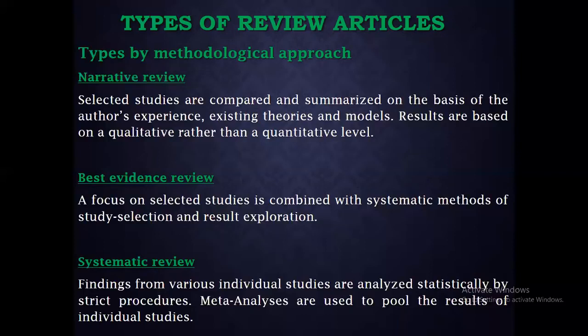In a narrative review, the work will be qualitative — for example, describing human behavior rather than numbers. A best evidence review focuses on selected studies combined with systematic methods of study selection and result exploration. A systematic review means findings from various individual studies are analyzed systematically by strict procedure, and meta-analysis is used to pool results of individual studies.